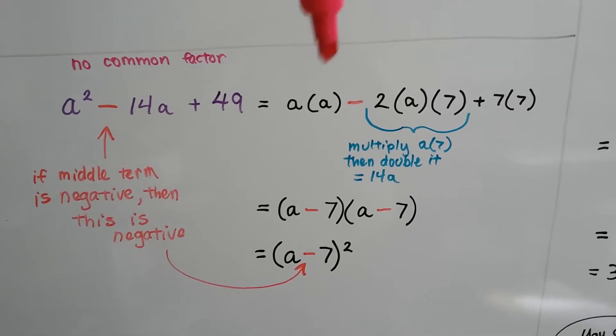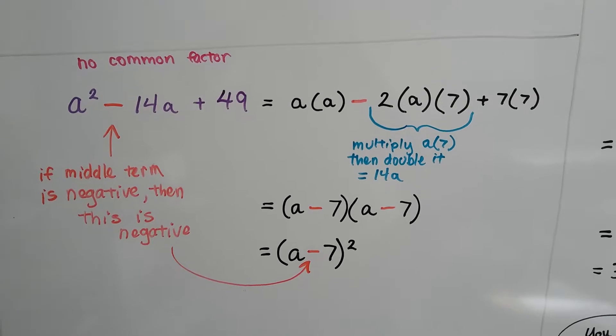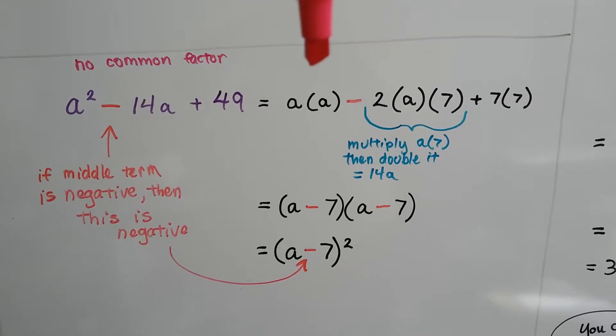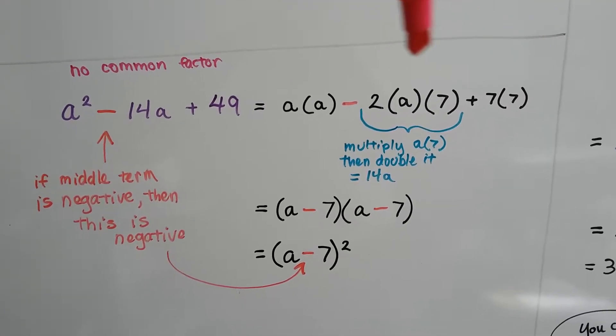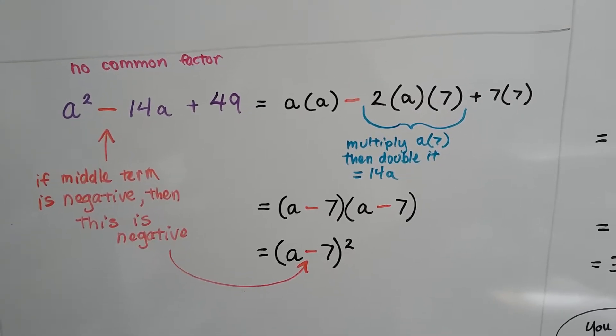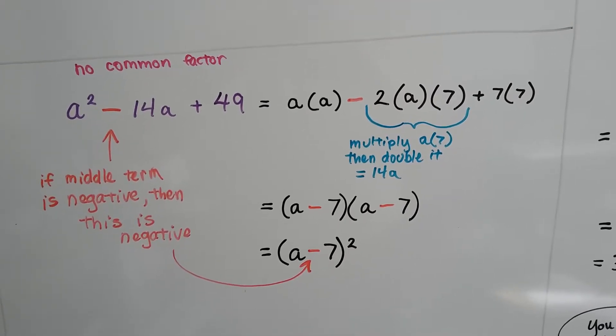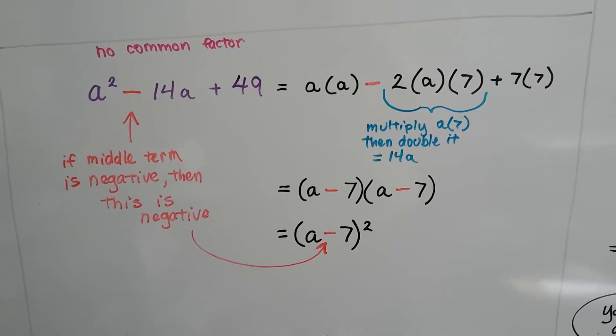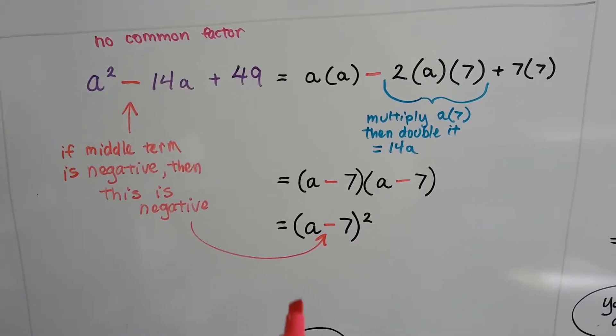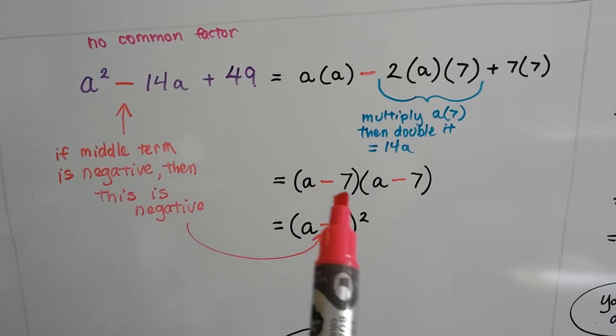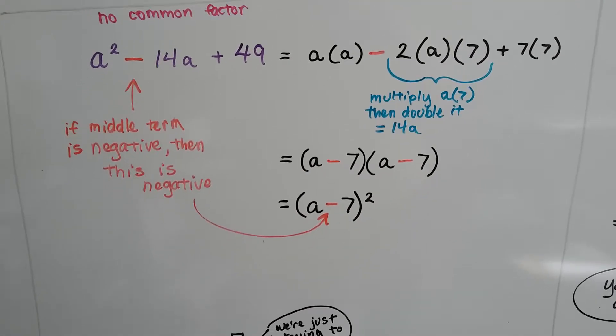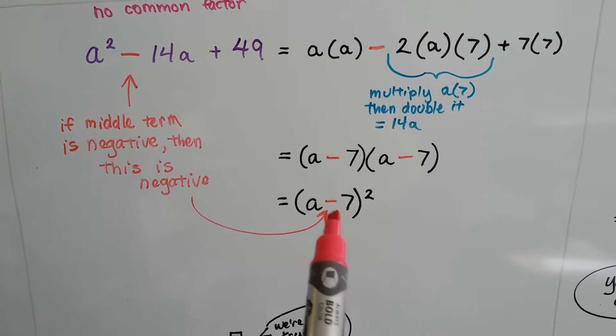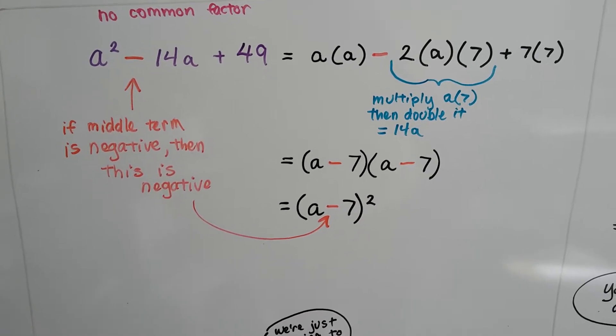We know a² is a times a. And we're going to subtract the a times the 7 twice. We multiply the a times the 7 and double it to get to this 14a. So we know that we've got an a - 7 and an a - 7. And we can write it as (a - 7)² in parentheses with a little square on the outside.